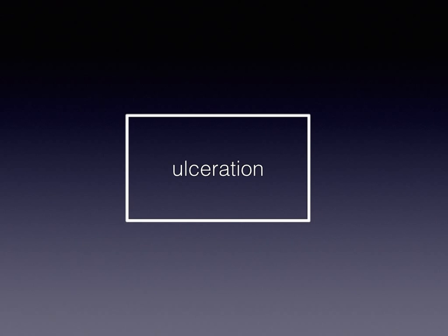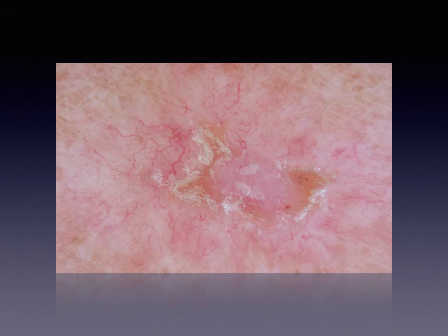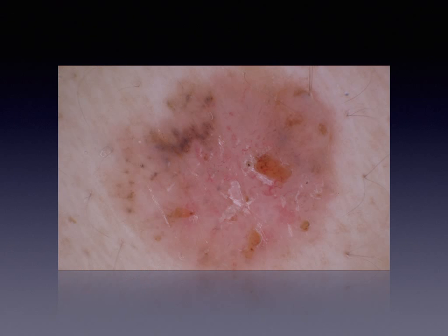Ulceration is also a very common dermoscopic criterion of BCC. It can be seen as a solitary, relatively large ulcerated area of yellow or reddish color, or as more than one smaller ulcerations. Ulceration is not a specific finding, since it can be present in several other tumors, especially squamous cell carcinoma, which is the most common differential diagnosis of BCC.